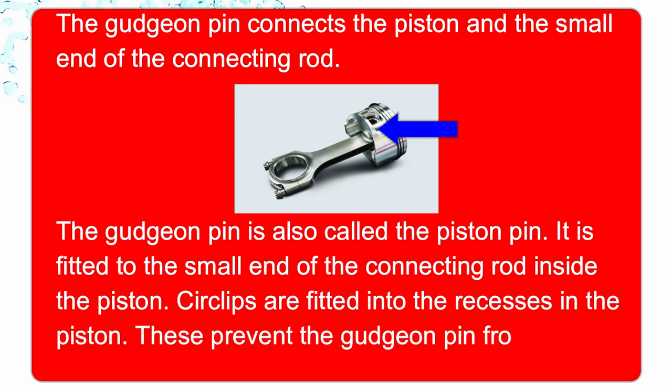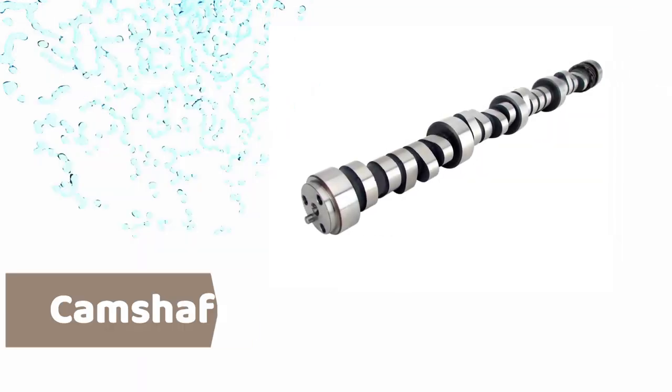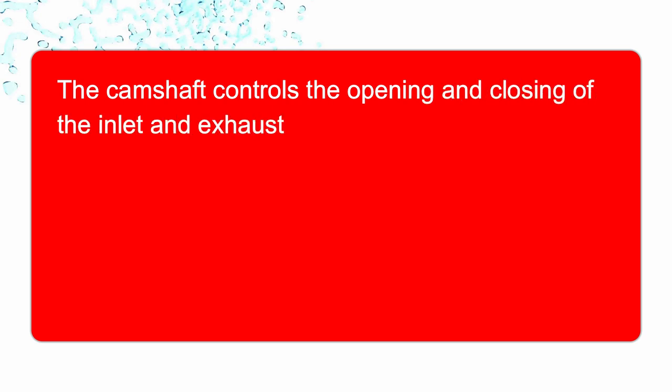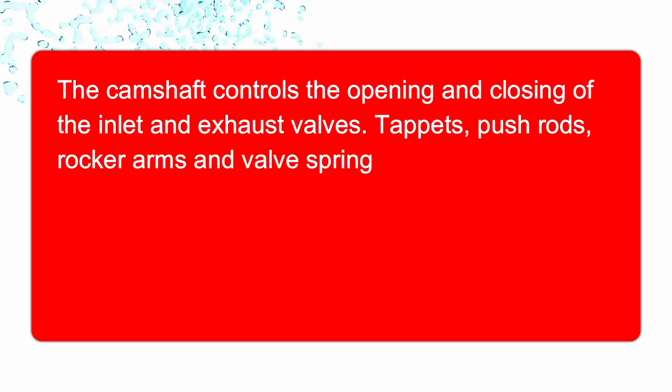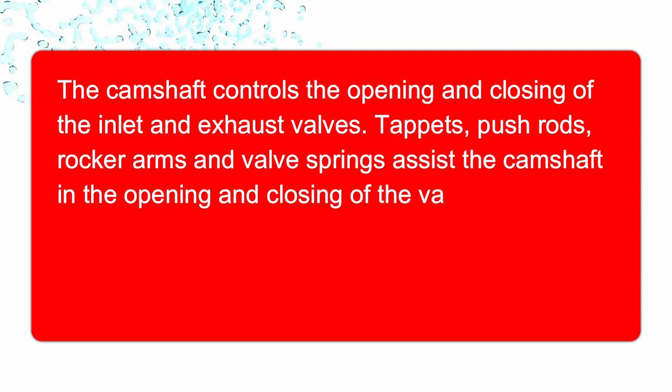These prevent the gudgeon pin from touching the cylinder wall. Now the next component is camshaft. The camshaft controls the opening and closing of the inlet and exhaust valve. Tappets, pushrods, rocker arms, and valve springs assist the camshaft in the opening and closing of the valves.